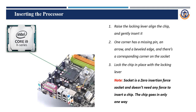The next step is processor insertion. Raise or release the locking lever, then gently insert the chip. One corner has a missing pin and an arrow at the edge — there is a cut-point corner on the chip to guide alignment. Lock the chip in place with the locking lever. This is a Zero Insertion Force socket, so no force is needed to insert the chip — it only goes in one way.